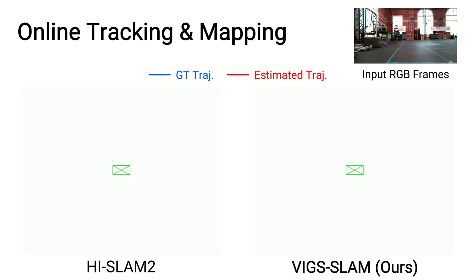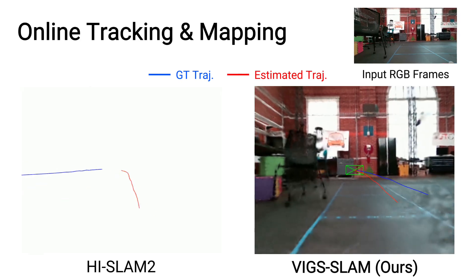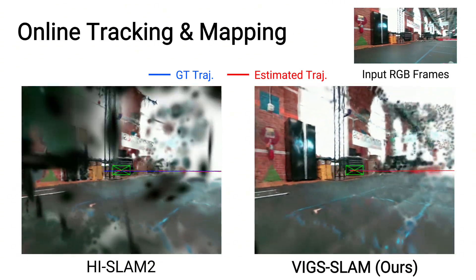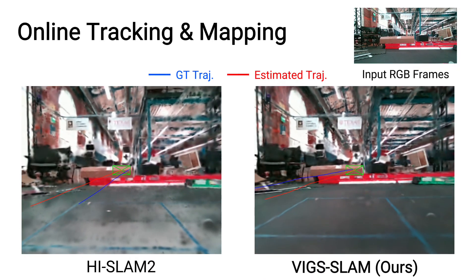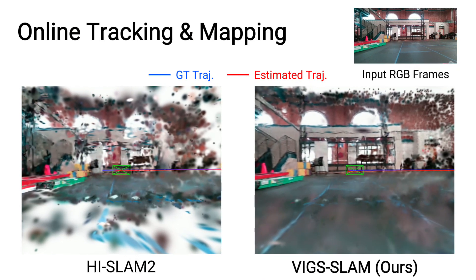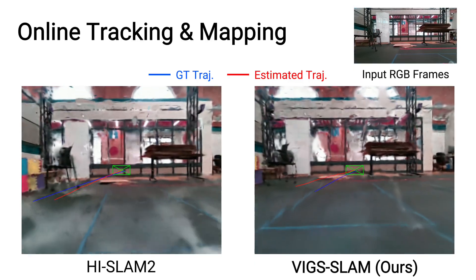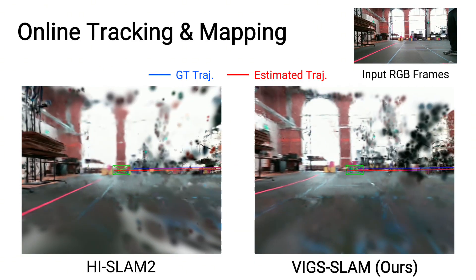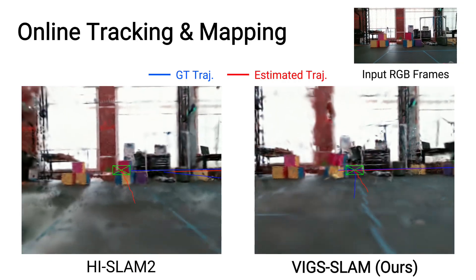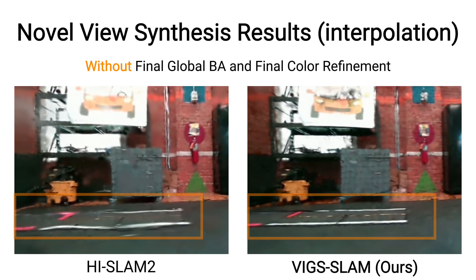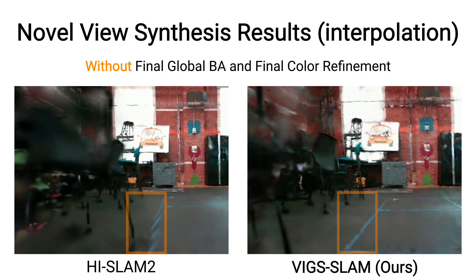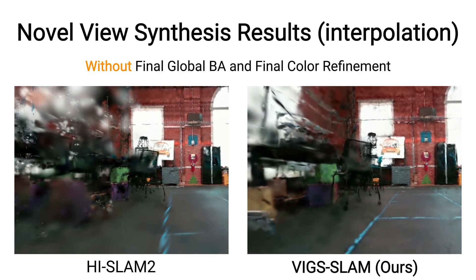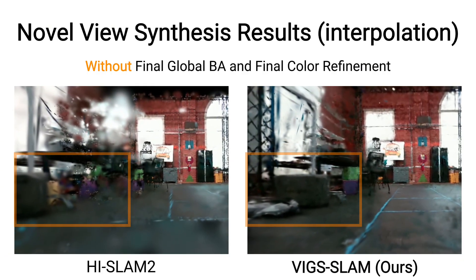Here we show our performance on the UTMM square one sequence. This dataset is captured in a large indoor open hall, which is particularly challenging for both tracking and mapping due to a distant cluttered background with limited foreground objects to provide reliable tracking cues. Compared to HighSlam2, our VIGS SLAM achieves more accurate tracking, reconstructs more complete geometry, and produces far fewer artifacts. We additionally show novel view synthesis results on interpolated views along cubic spline smoothed input trajectory, both without and with the final global bundle adjustment and color refinement.